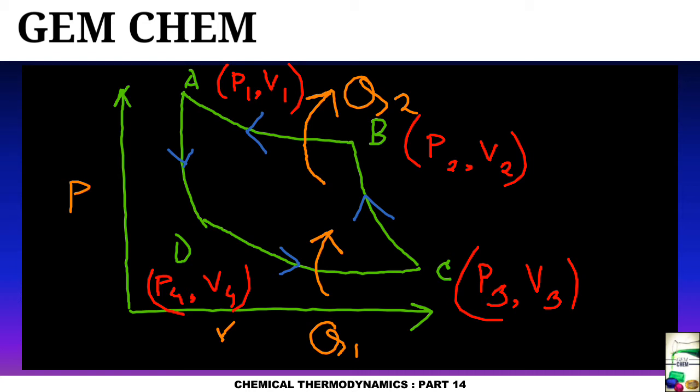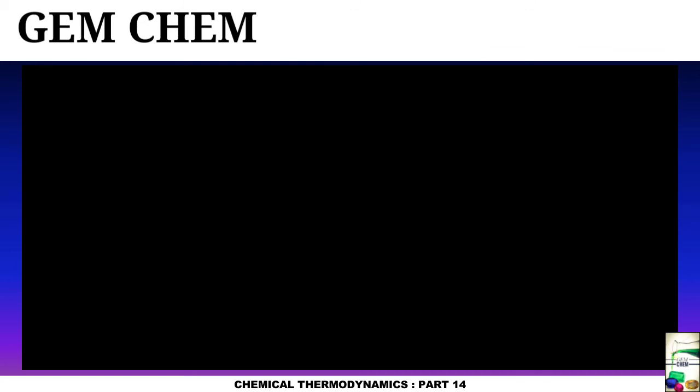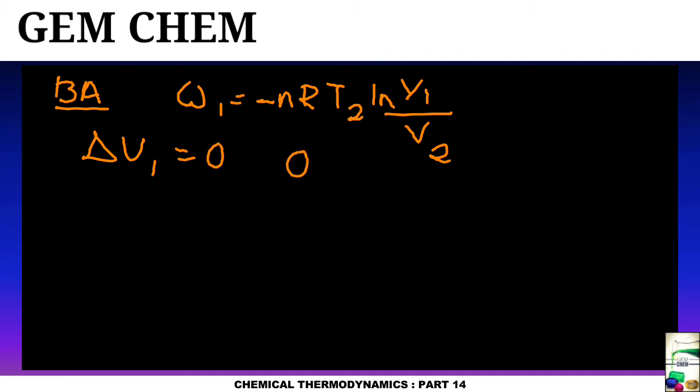Next, if you try to write down for few steps, then for BA, which is isothermal compression, W1 comes to be as minus nRT2 ln V1 by V2. Again, delta U1 equals to 0, and Q2 comes to be as nRT2 ln V1 by V2.